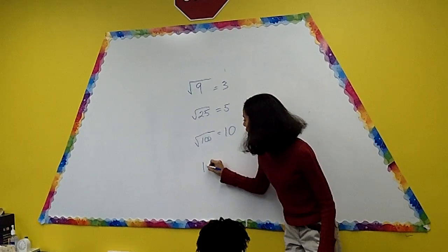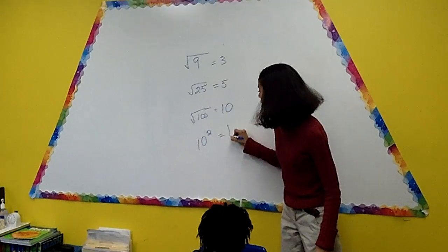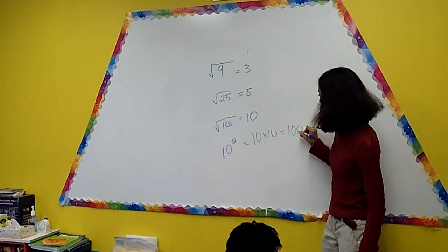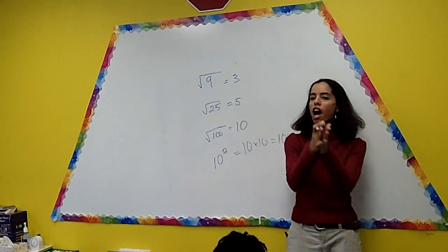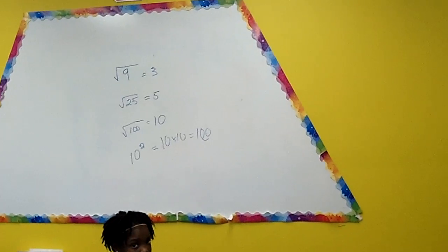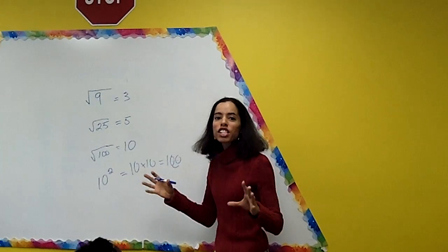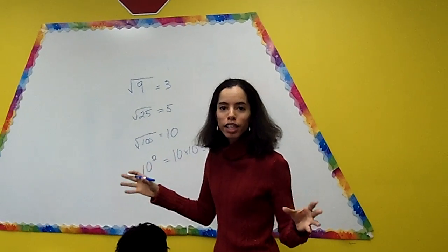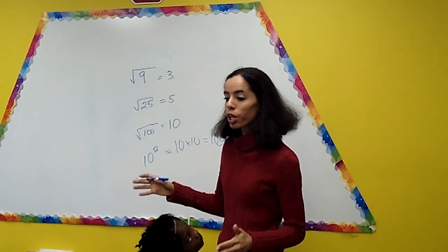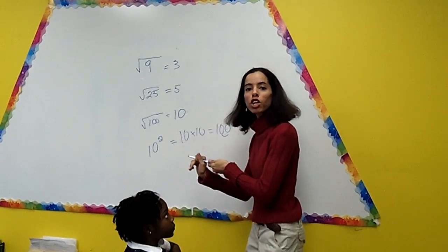And also, 10 squared, or 10 to the second power, is the same thing as 10 times 10, which is 100. So you guys get a round of applause. Fantastic. And as you can see, it is extremely easy to teach your kids anything at any age. You just have to try it. Our leaders are brilliant. All of our babies can do it. We just have to try. Thank you for watching No Limit Learning.